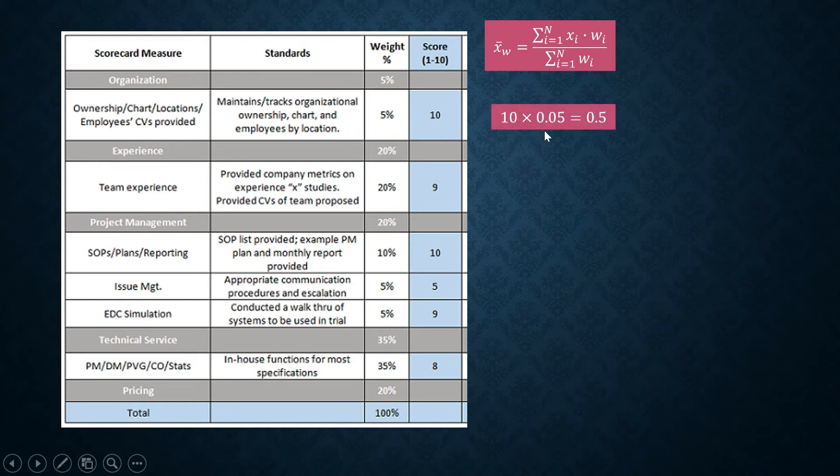10 times 0.05. What is 10 here? 10 is x sub 1, the score. What is 0.05? 0.05 is the weight of this criteria: maintains and tracks organizational ownership chart and employees by location. The weight of this criterion is 5%. That's why 10, x sub 1, times w sub 1 which is 0.05.